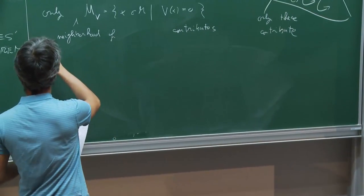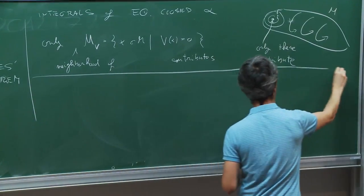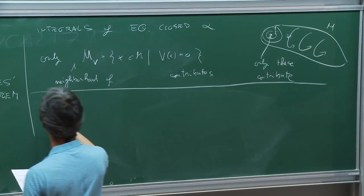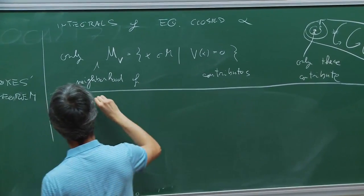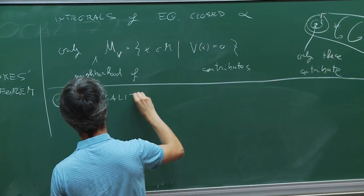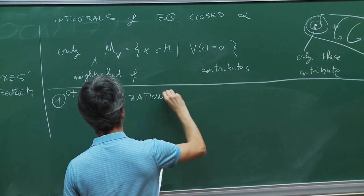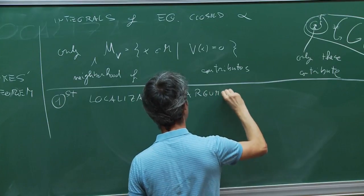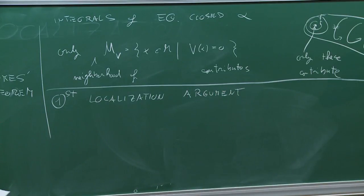Only the neighborhoods of the fixed points contribute. Let's call M_V the set of points where the vector field V vanishes — only the neighborhood of this space really contributes. Let's see why this is the case. I will give you two arguments. First localization argument.